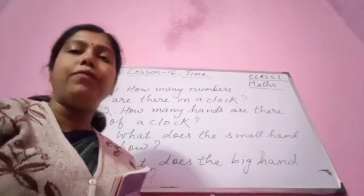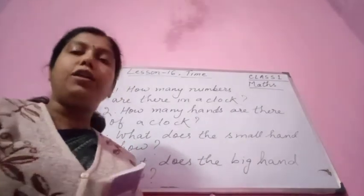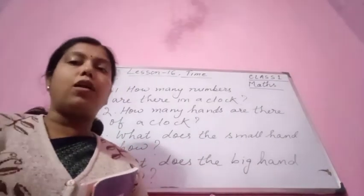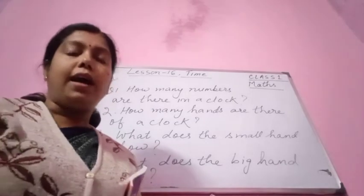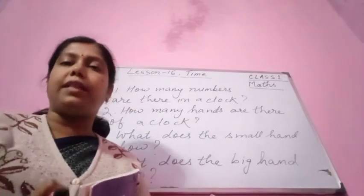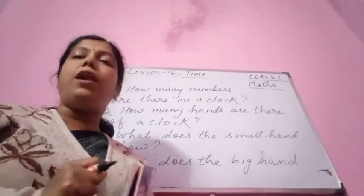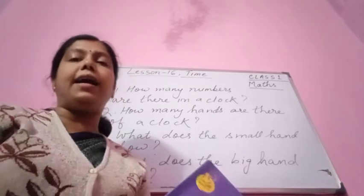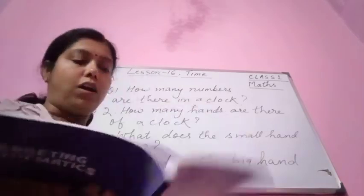All of you have a clock in your home, so you can see the clock. You can see the numbers are there, the small hand is there, and the big hand is there.